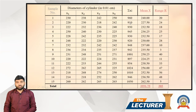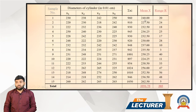The total for sample 1 is 9.60 divided by 4, giving us a mean X-bar of 2.40.